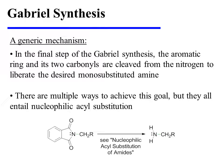In the final step of the Gabriel synthesis, the aromatic ring and its two carbonyls are cleaved from the nitrogen to liberate the desired monosubstituted amine. There are multiple ways to achieve this goal, but they all entail nucleophilic acyl substitution.